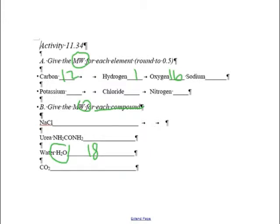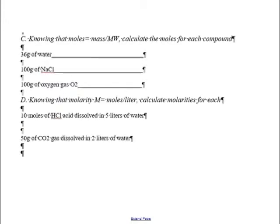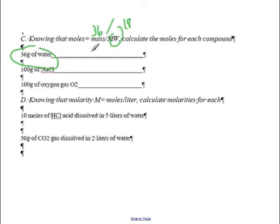Now remember all those equations I asked you to write down? We're going to do it backwards. How do you figure out the number of moles if you know the grams and the molecular weight? Let's do water—molecular weight is 18. If we have 36 grams of water, how many moles is it? 36 grams divided by 18 equals two moles. I'll let you figure out the rest of them.